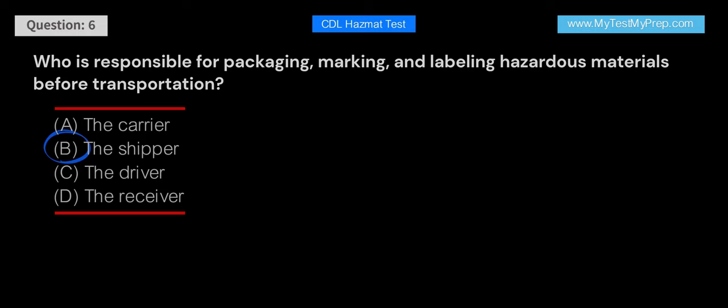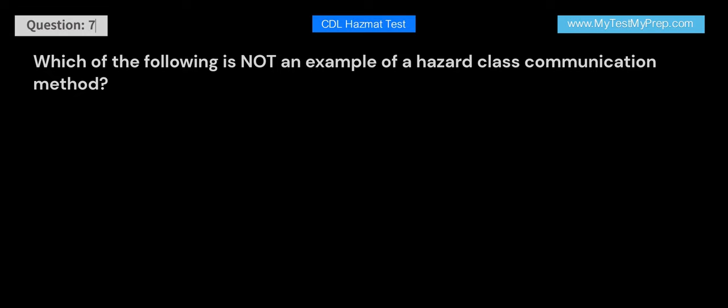Answer: B. The shipper is responsible for packaging, marking, and labeling hazardous materials before transportation. This ensures that the materials are properly prepared for transport and helps prevent accidents and incidents.